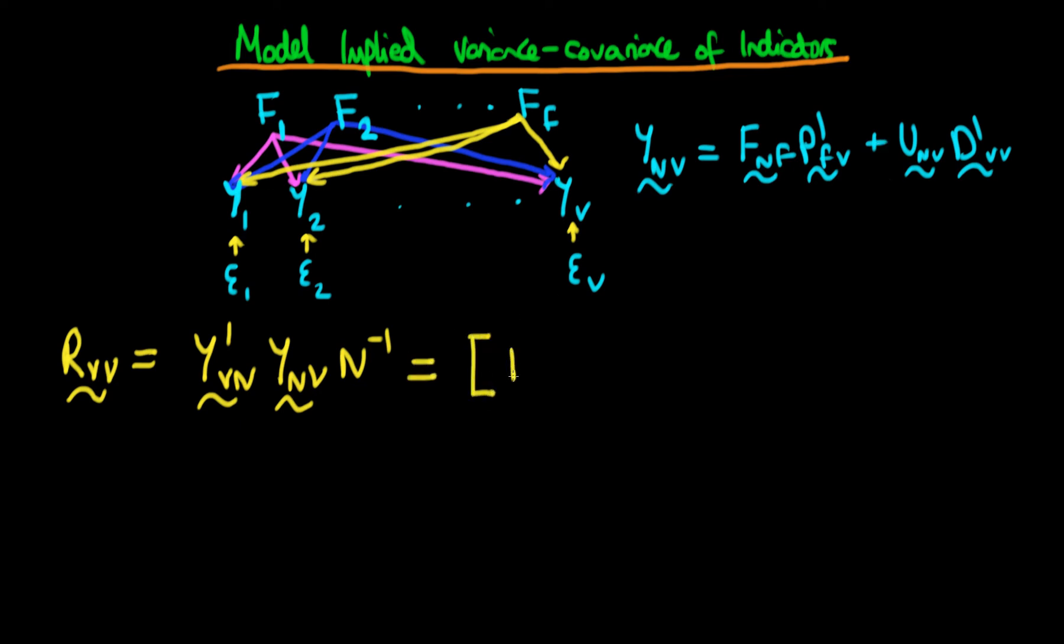which we've shown up here to represent our model. So the first parenthesis is just f_nf times p primed fv plus u_nv times d primed vv. And it's the transpose of that entire parenthesis. And then we just have to rewrite that particular parenthesis again.